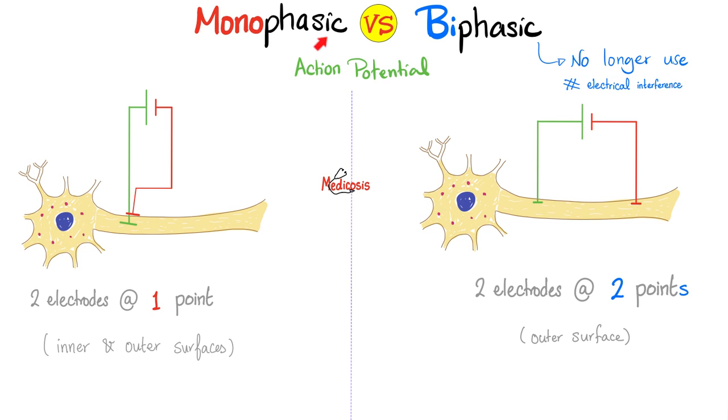Now to today's topic. What's the difference between monophasic and biphasic? Monophasic is when you put the two electrodes at one point. One on the inside surface and one on the outside surface of the nerve. But both of them are on the same point here. However, biphasic, two electrodes at two different points like that. And both are on the outer surface of the nerve. Which one do we use clinically? Only the monophasic. What's the problem with the biphasic? This first point has not finished yet, causing an electrical interference. That's why we no longer use the biphasic.